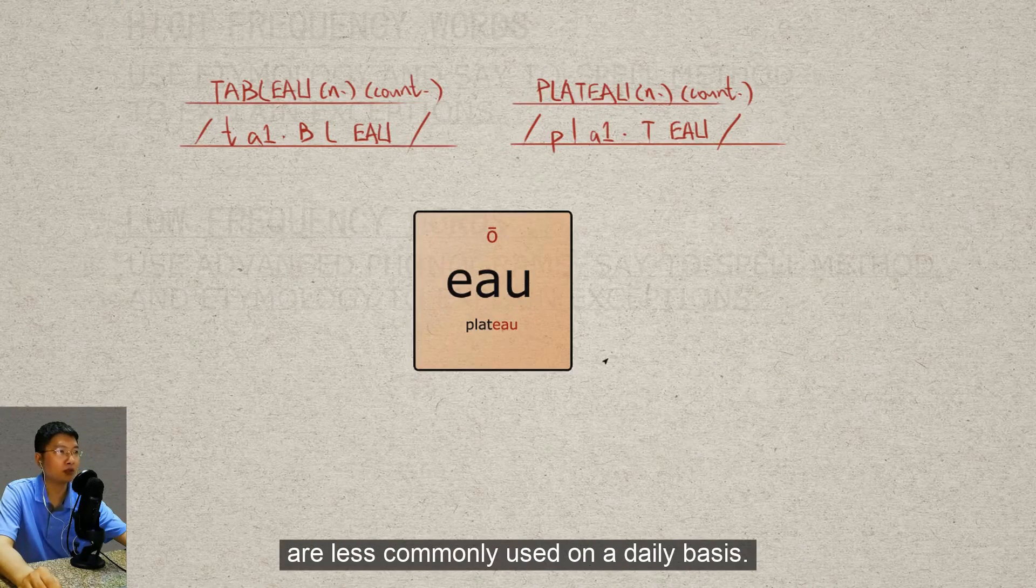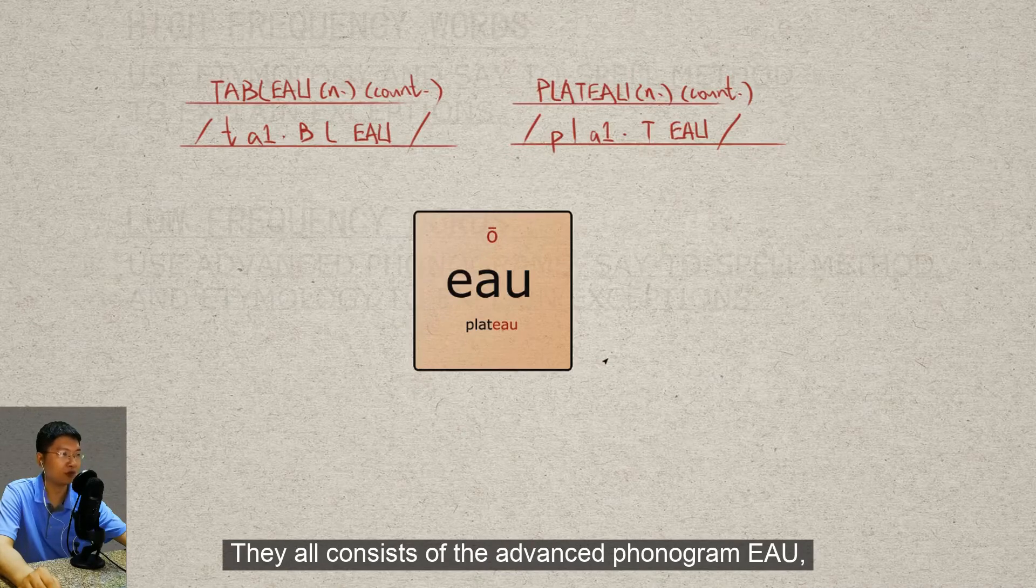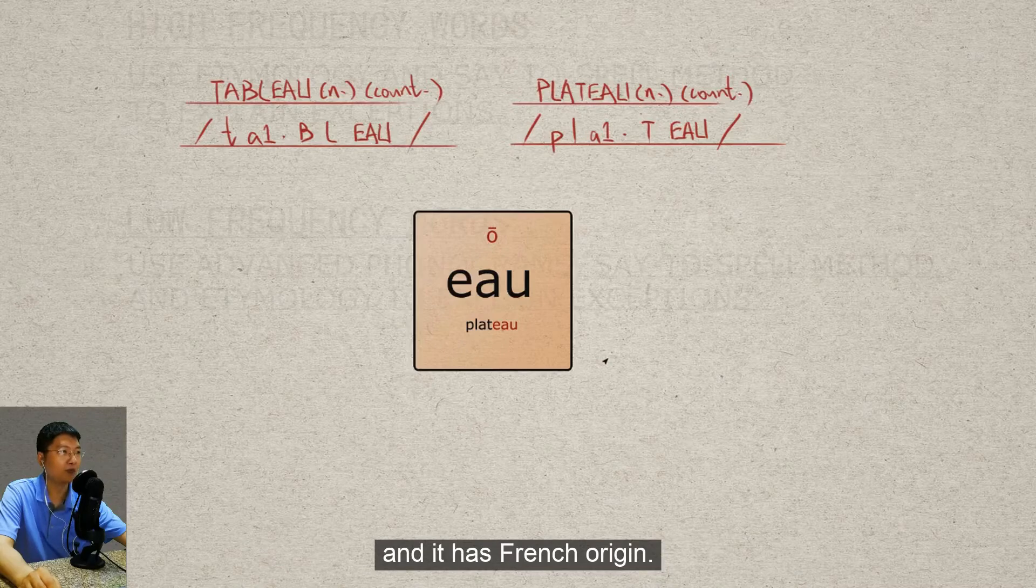For example, words like 'tableau' and 'plateau' are less commonly used on a daily basis. They all consist of the advanced phonogram E-A-U, and it has French origin.